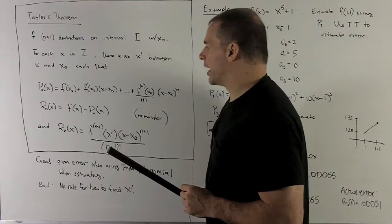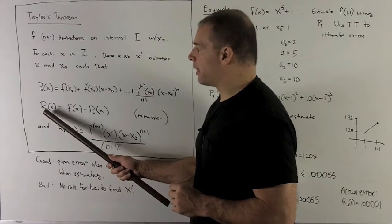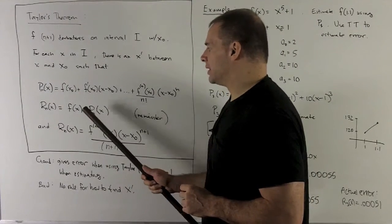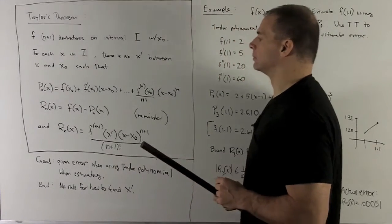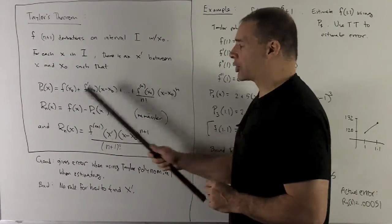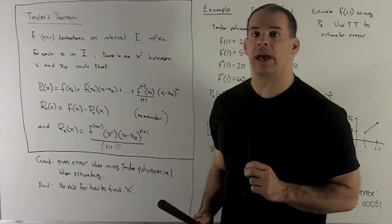For Taylor's theorem, we're also going to have what's called the remainder function. That's just going to be the difference of f(x) and your Taylor polynomial at x. That's measuring the actual error when we estimated the point x.